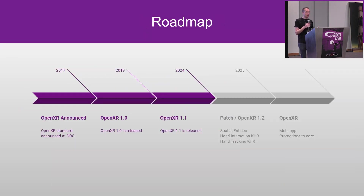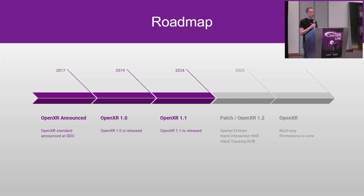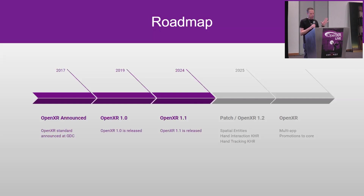A little bit about the roadmap. The OpenXR standard was announced in 2017 and in 2019 version 1.0 was launched. From there a lot of work was done on getting all the conformity implementations out there and running on headsets.